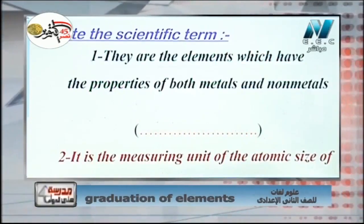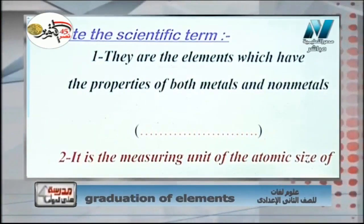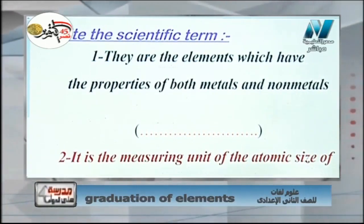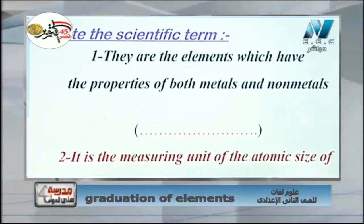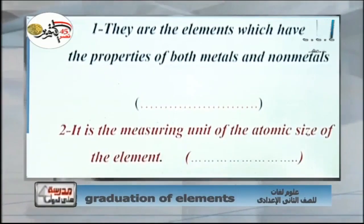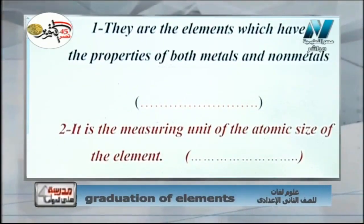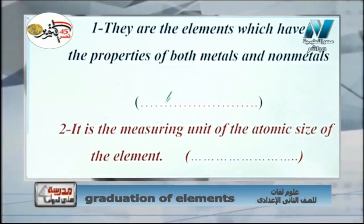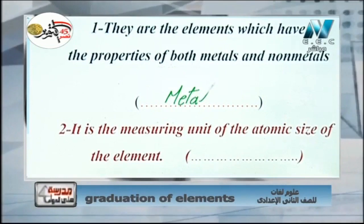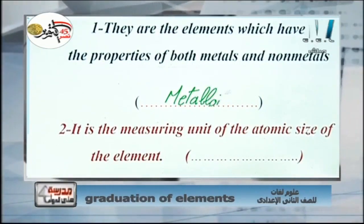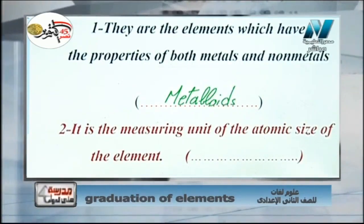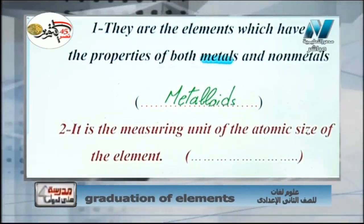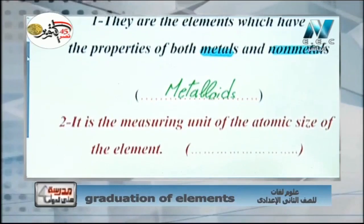Scientific terms: number one — elements that have the properties of both metals and non-metals are called metalloids. Metalloids have properties of both metals and non-metals at the same time, for example silicon.